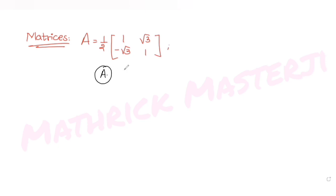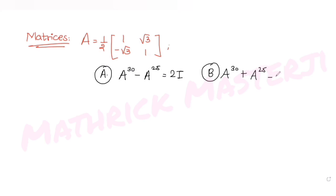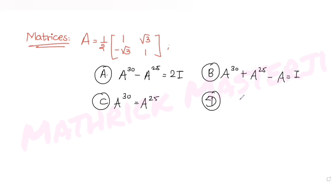The first answer choice is A raised to 30 minus A raised to 25 equals 2I. The second is A raised to 30 plus A raised to 25 minus A equals I. The third is A raised to 30 equals A raised to 25. And the fourth is A raised to 30 plus A raised to 25 plus A equals I.